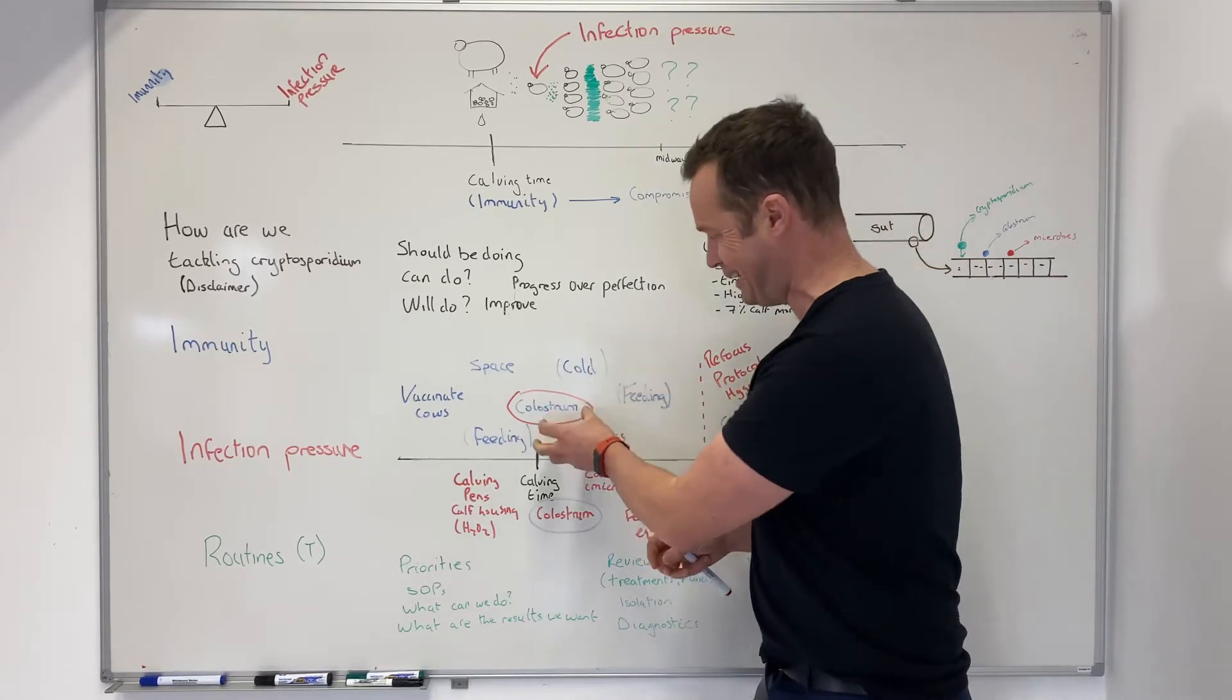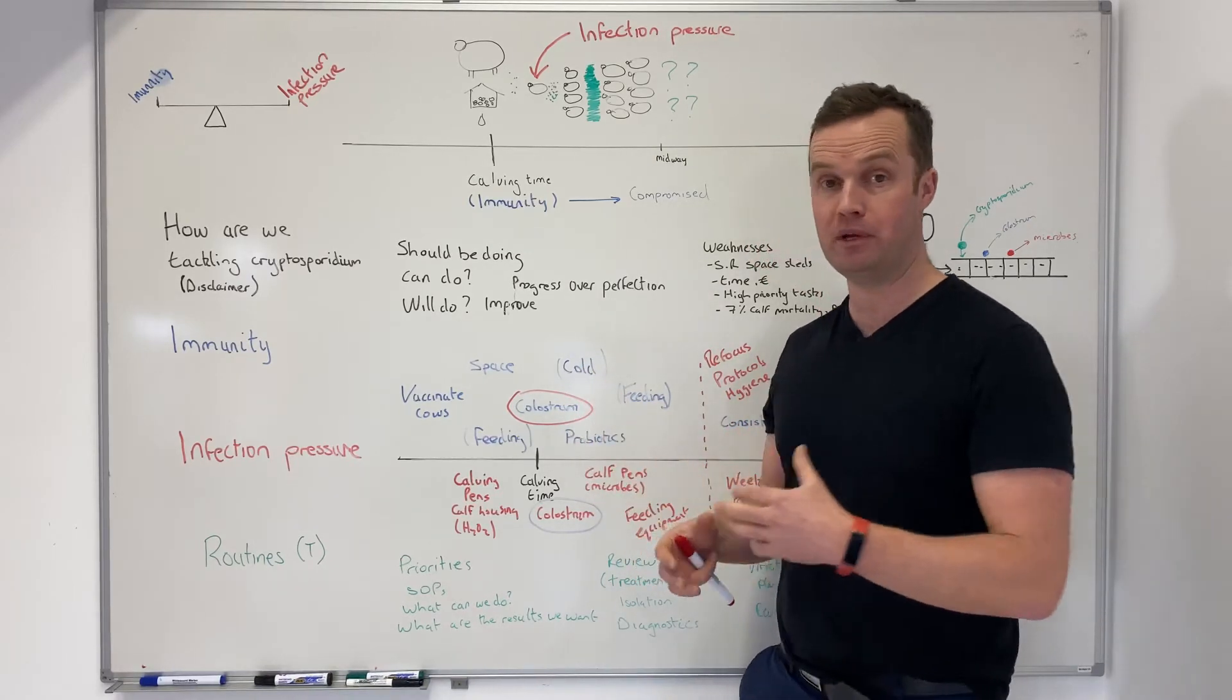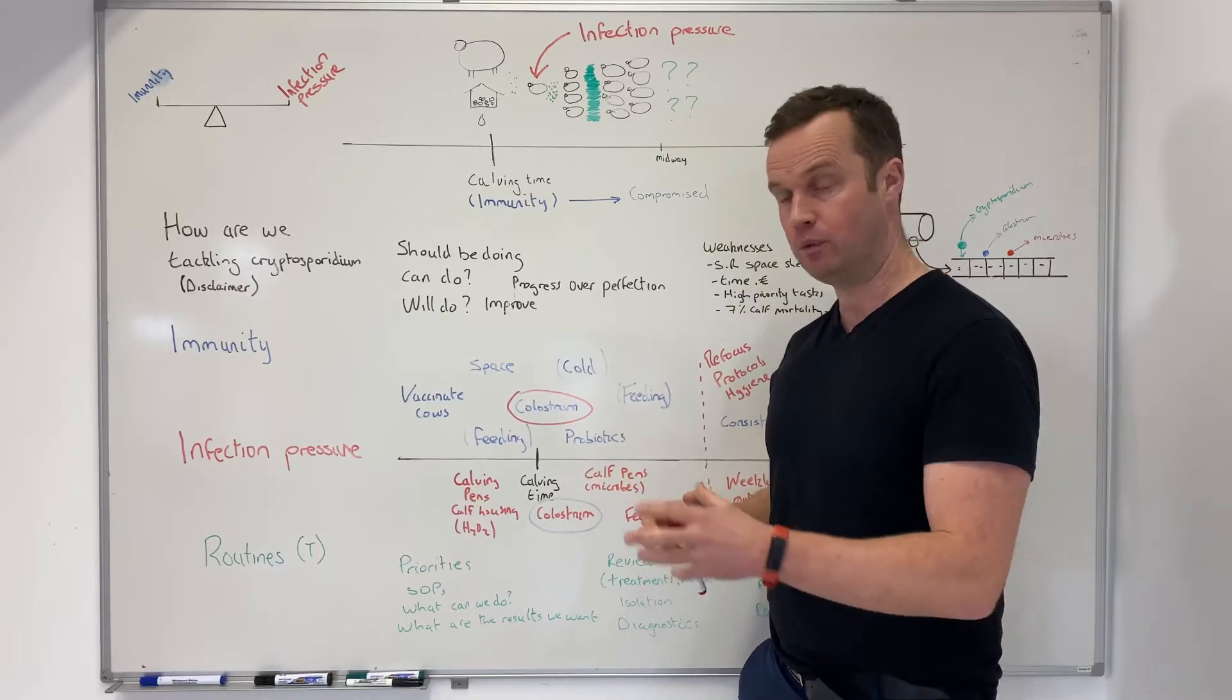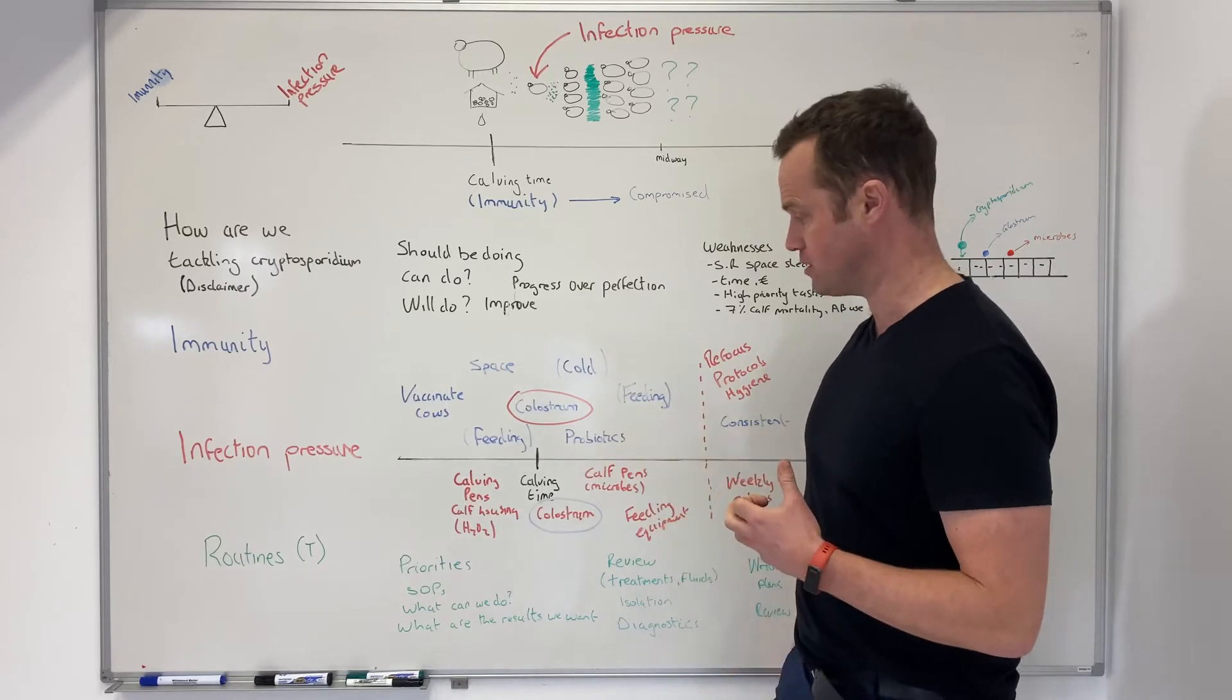We also have a product called Colostrum Gold, which is just basically freeze-dried colostrum. We'll use that replacer, particularly when we have heifers calving in first. If there's any issues around quality that we just don't want to compromise, we'll use that and we'll restore our own high-quality maternal colostrum.